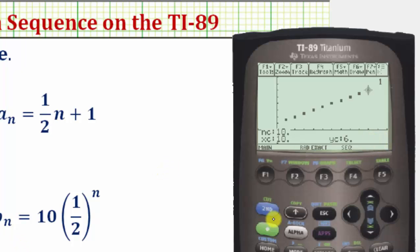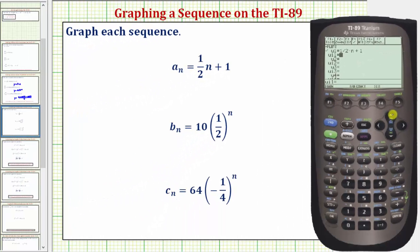And now let's graph b sub n, so we'll press diamond F1. Let's go ahead and press up and then clear. Now we'll enter the new formula which is ten, times one half raised to the power of n. So we'll have one half in parentheses, raised to the power of n. Again n is alpha six, enter.